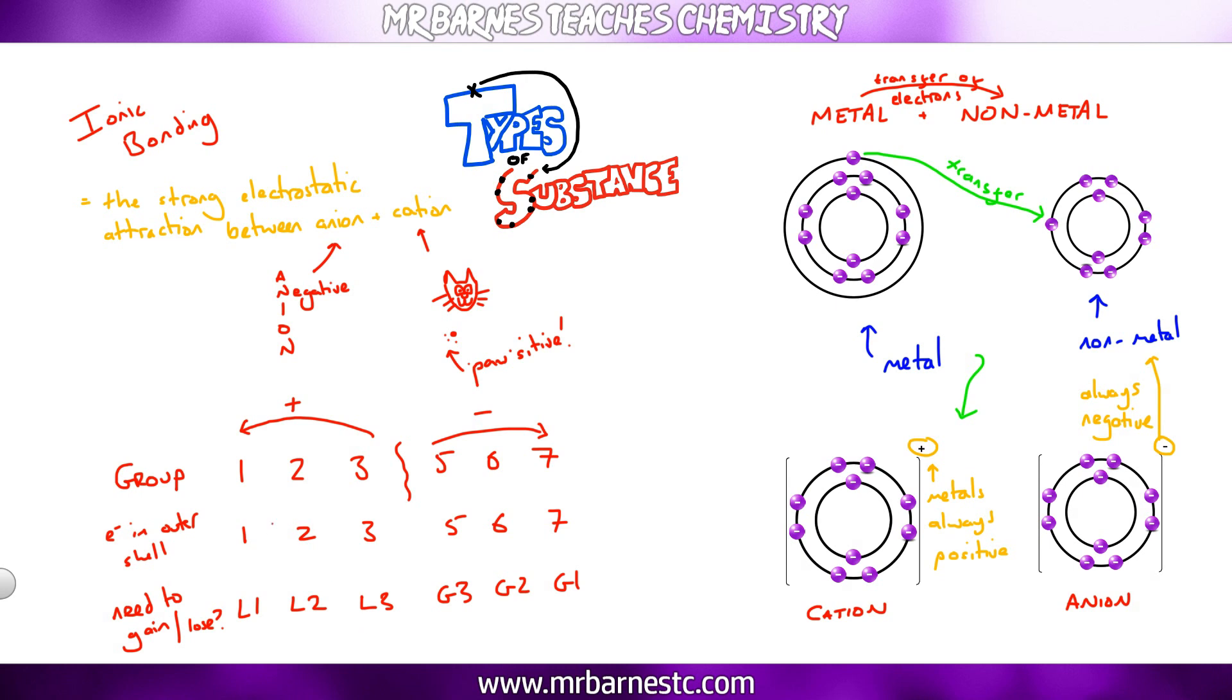Once you've known that, the charge is easy. If it's group one plus one, group two two plus, group three three plus, group five three minus because you've got three negative electrons added, group six two minus, two negative electrons added, and group seven one minus.